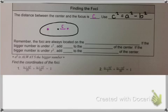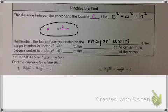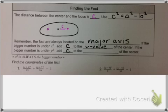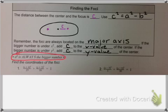I want to remind you that the foci are always located on the major axis — so they're always on the part that's longer. If the bigger number is under your x squared, you're going to add c to the x value of your center. And if the bigger number is under y squared, you're going to add c to the y value of the center. A very important reminder: a squared is always the bigger number, it doesn't matter whether it's under x squared or y squared.